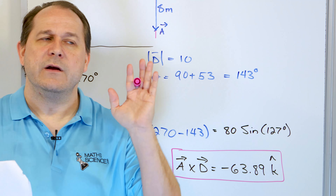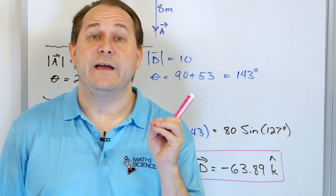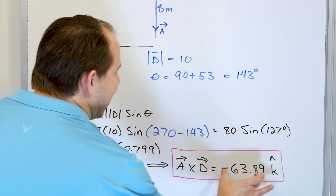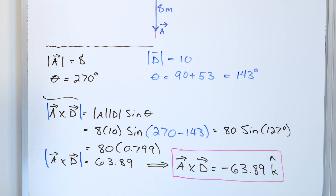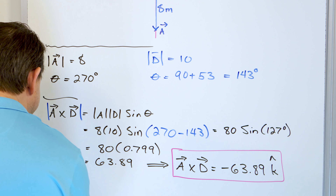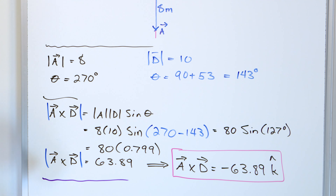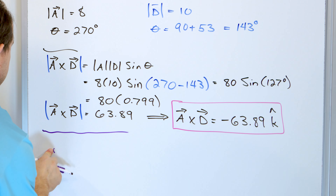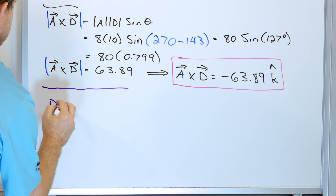It's a two-part process. When you do AB sine theta, that gives you the length, but then you have to associate a direction with it. The absolute value of this vector is 63.89 units long. Now for part B, we want to go in the reverse direction. Instead of A cross D, let's find D cross A.